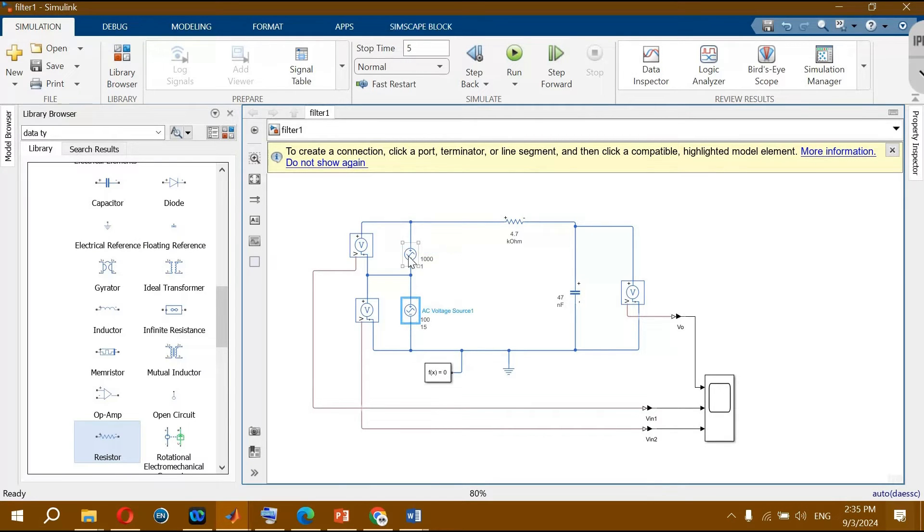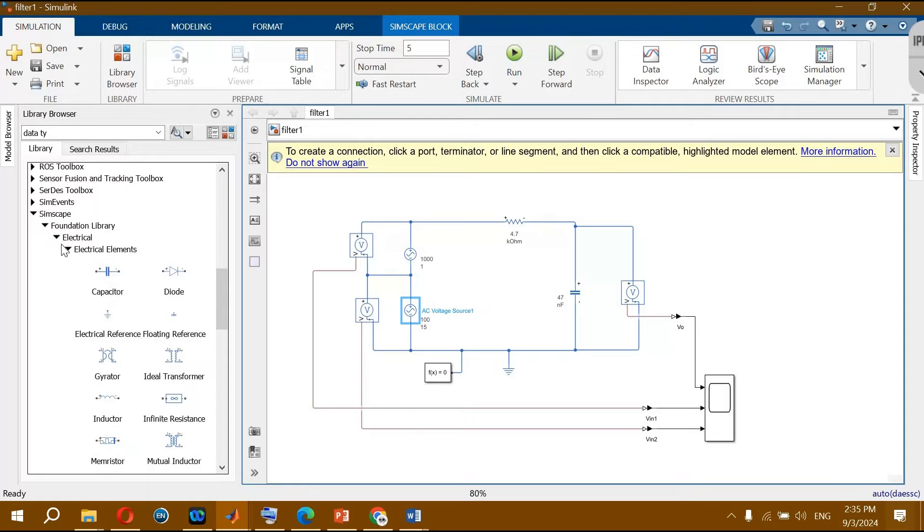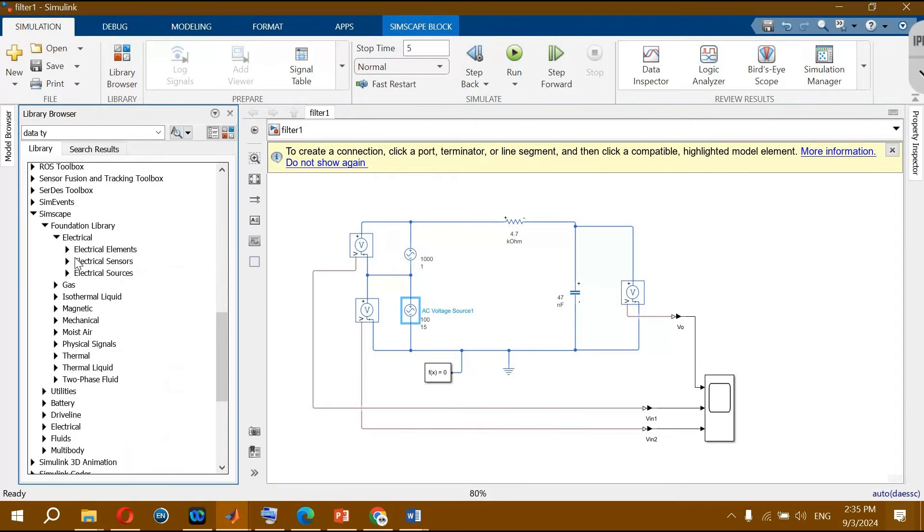And bring the two sources which are AC sources from electrical sources. That's all to set the parameter of this circuit.